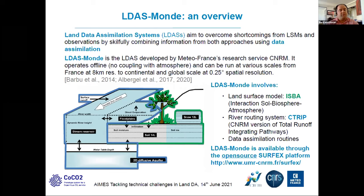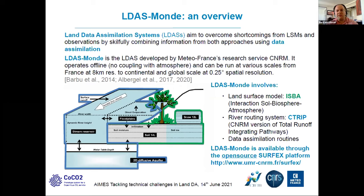LDASMON involves, first of all, a land surface model — the ISBA land surface model — which uses a soil with 14 layers spanning 12 meters. It also includes a snow scheme with 12 layers, and an interactive vegetation to simulate variables such as biomass or leaf area index. This ISBA land surface model can be coupled with a river routing system, C-TRIP, to provide simulations of river discharges. Finally, it includes data assimilation routines, and LDASMON is available through the open-source SURFEX platform.